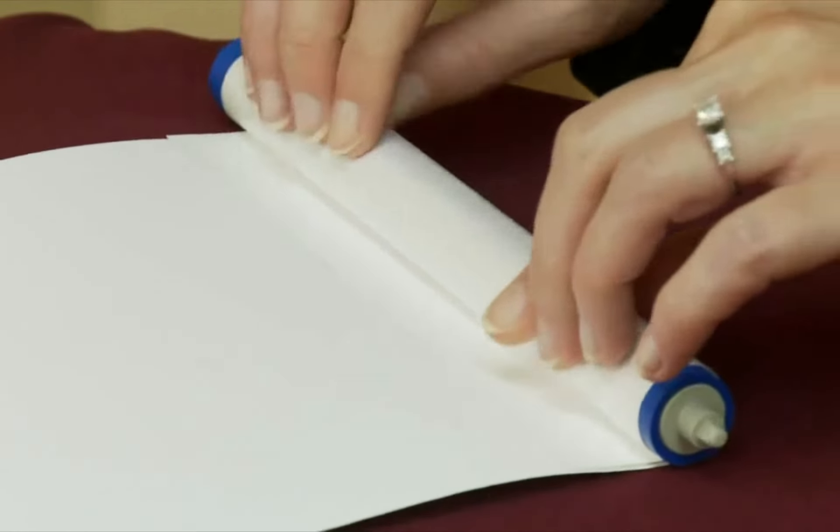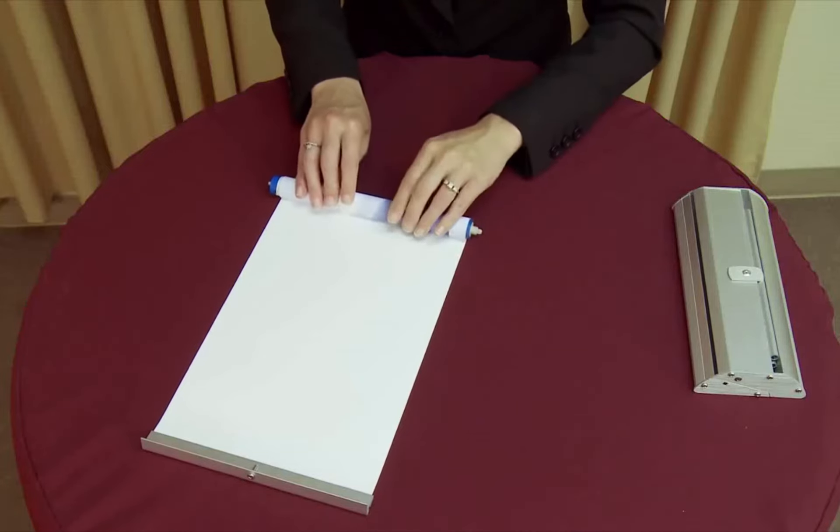Tightly roll the graphic from the bottom attachment point to the banner rail while keeping the graphic tightly rolled.